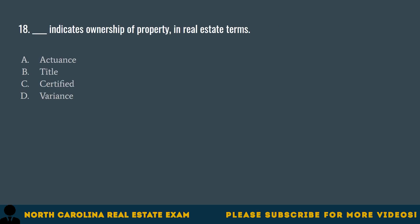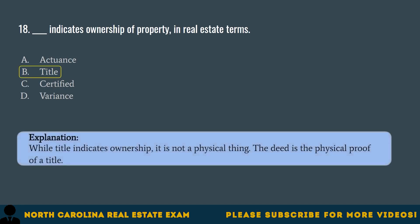Question 18. Blank indicates ownership of property in real estate terms. A. Actuance. B. Title. C. Certified. D. Variance. The correct answer is B. Title. While title indicates ownership, it is not a physical thing. The deed is the physical proof of a title.